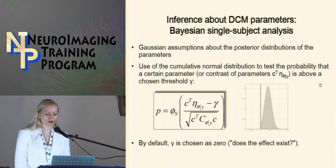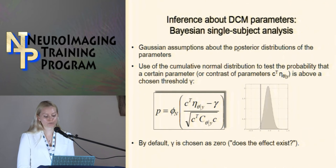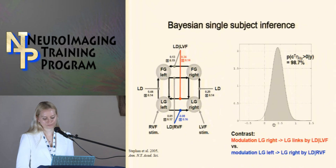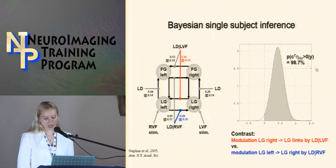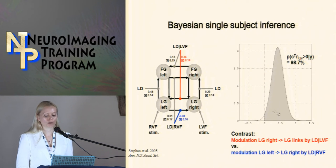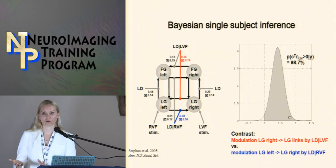When making inference about DCM parameters in a single-subject analysis, you use the cumulative normal distribution to test the probability that a parameter is above a threshold gamma. After running a DCM, you get a distribution and can compute the actual probability that a parameter is greater than zero — the probability that a given connection exists. For example, if priors are centered around zero but the data shifts the distribution upward, you can ask: what is the probability that the C parameter is greater than zero, given your data?